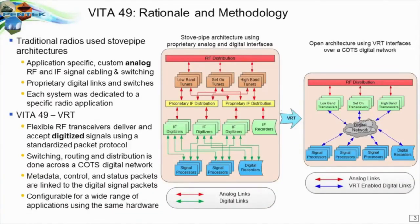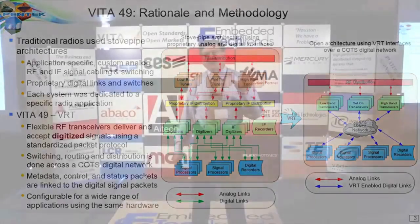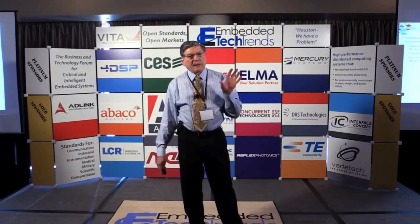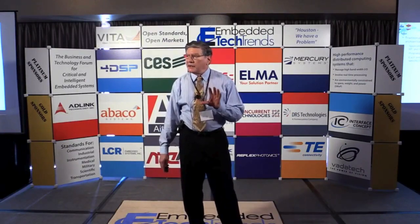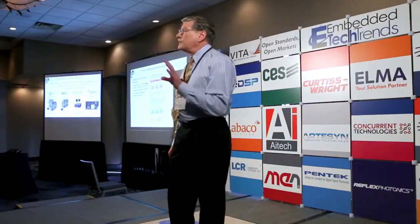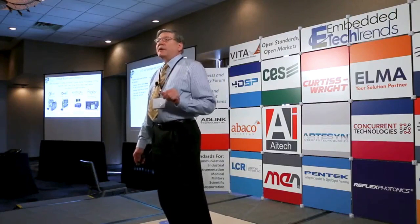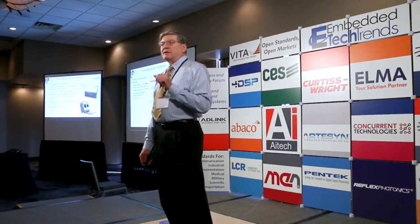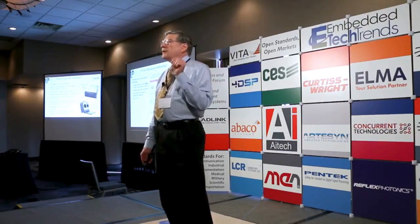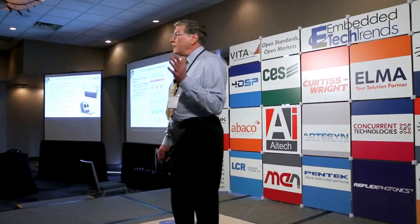So what's the rationale? Traditional systems for radio and radar used what's called stovepipe architecture. All of the wiring from the RF to the IF to the A-to-D converters was done with custom cabling laid out according to a particular architecture based on the application, and it was not very flexible. Vita 49, also known as VRT — Vita Radio Transport Protocol — VRT is the same thing as Vita 49.